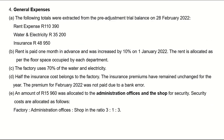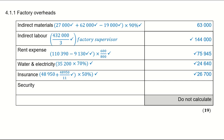An amount of 15,960 was allocated to administration and the shop for security. Security costs are allocated in the ratio: factory : admin : shop. The 15,960 represents the admin and shop portions (parts 1 and 3 of the ratio). I want the factory portion, so I multiply 15,960 by 3 ÷ (1 + 3) = 3/4, giving 11,970 for the factory.